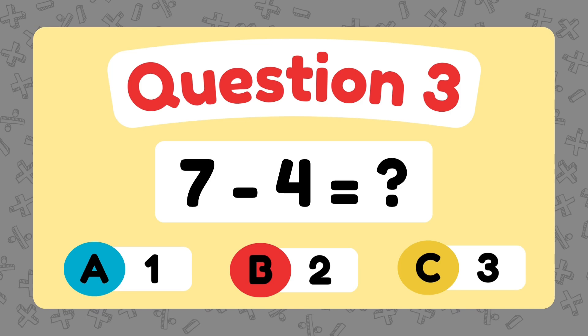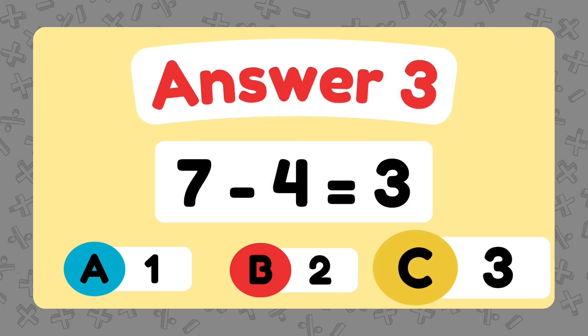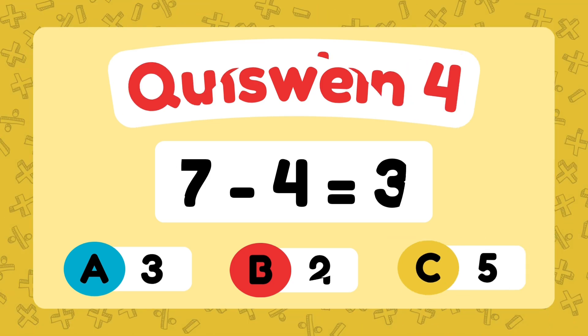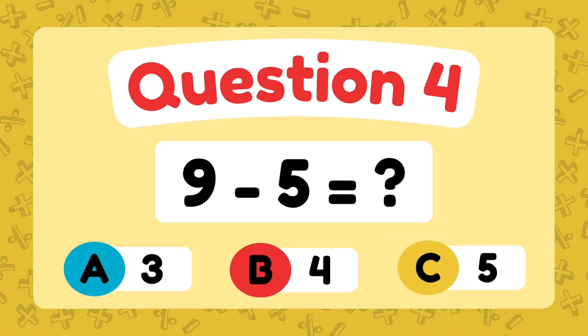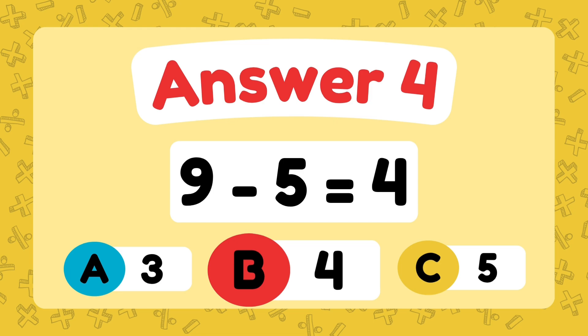What is 7 minus 4? The answer is 3. What is 9 minus 5? The answer is 4.